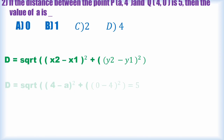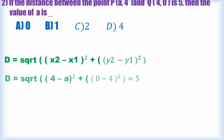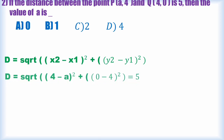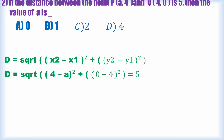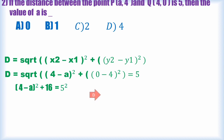Distance = √[(x₂ - x₁)² + (y₂ - y₁)²]. Substituting: √[(4 - a)² + (0 - 4)²] = 5. The distance is given, so we square both sides to remove the square root.